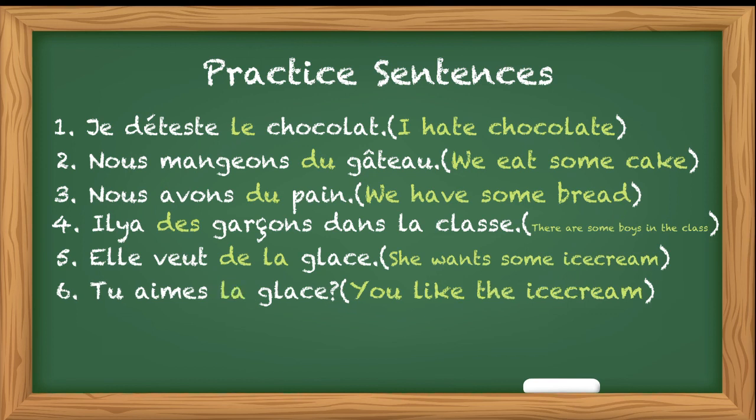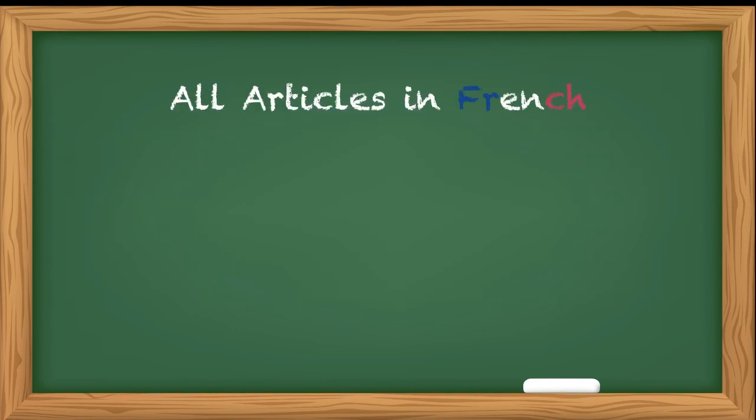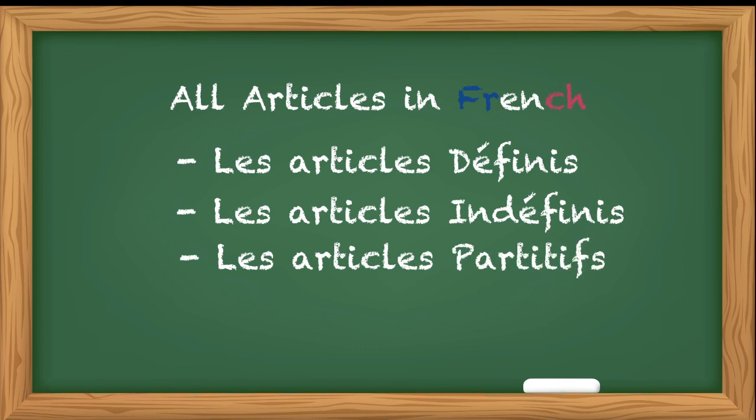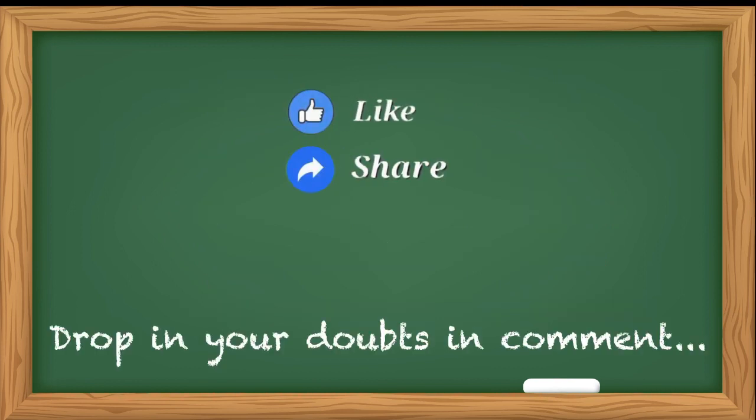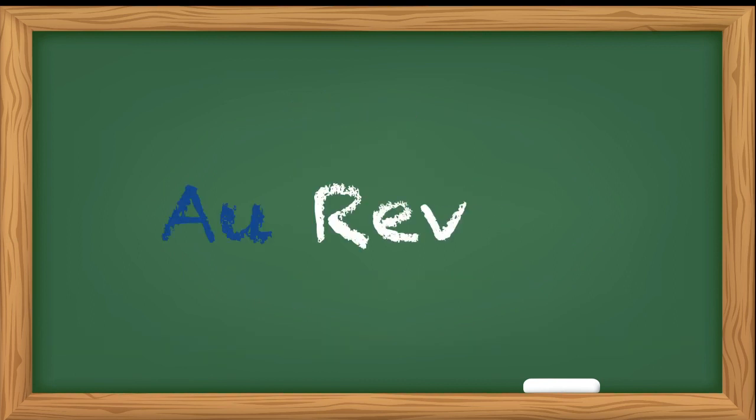I hope you have understood how we have to use partitive articles. With this, we have completed all the articles in French: les articles définis, indéfinis, partitifs et contractés. We have done all four types of articles. If you still have any problem, please do write in the comment section. Till then, keep learning. Au revoir, prenez soin de vous. Take care of yourself.